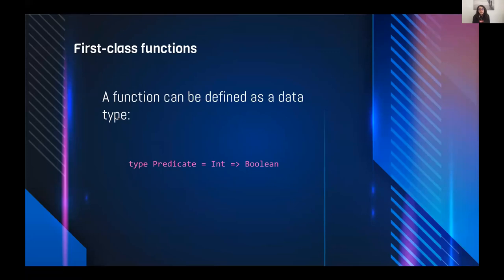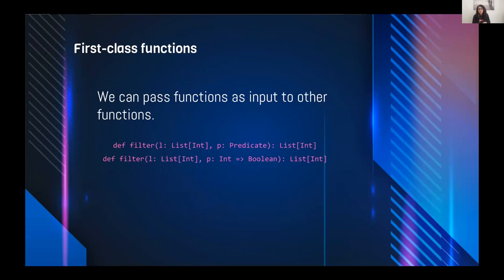For example, when we use the '++' operation to concatenate two lists, we construct a new list but the original list is not updated or changed. Scala supports first-class functions, meaning functions are treated like values. Because functions can be defined as a data type, we can associate a type alias to a specific function — for example, a 'Predicate' that takes an Int and returns a Boolean.